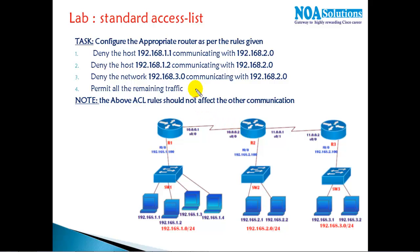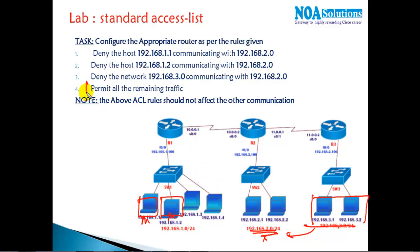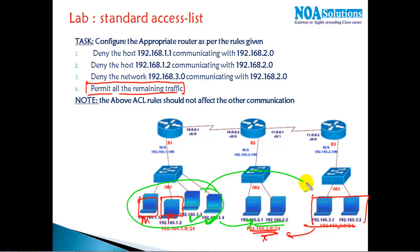Once routing is working, I want to deny specific traffic: host 1.1 and host 1.2 should not communicate with the 2-network, and the complete 3-network should not communicate with the 2-network. All remaining traffic is permitted — for example, hosts 1.3 and 1.4 can still communicate with the 2-network, and all hosts can communicate with the 3-network.